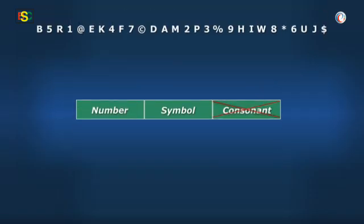And here, triplet 5R1 is rejected as it is not in the sequence number, symbol, not consonant. Triplet 1-at-the-rate-E is in sequence N, S, not C, thus accepted.